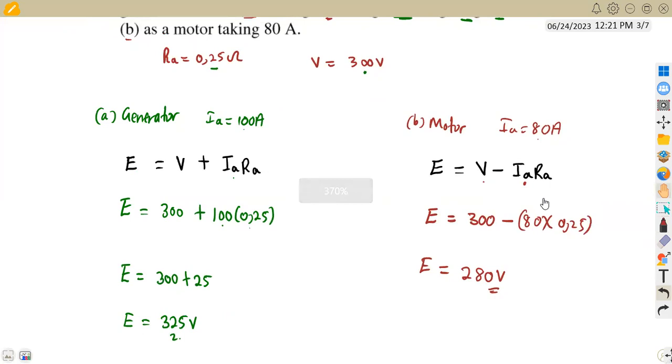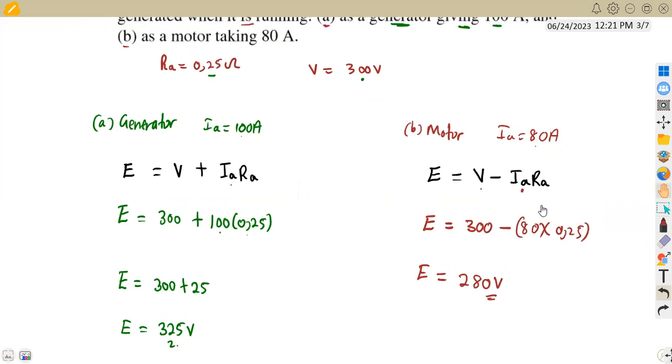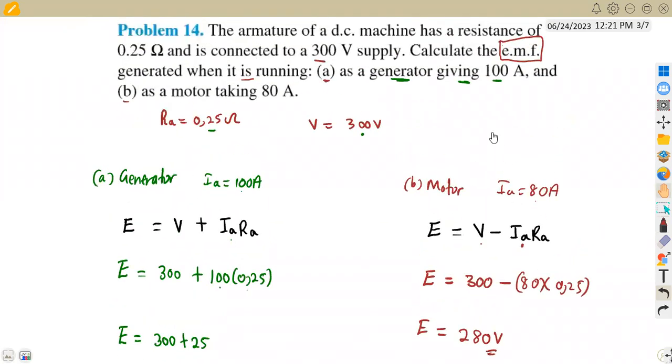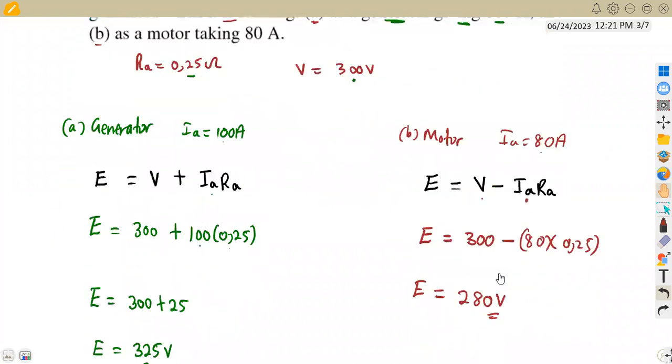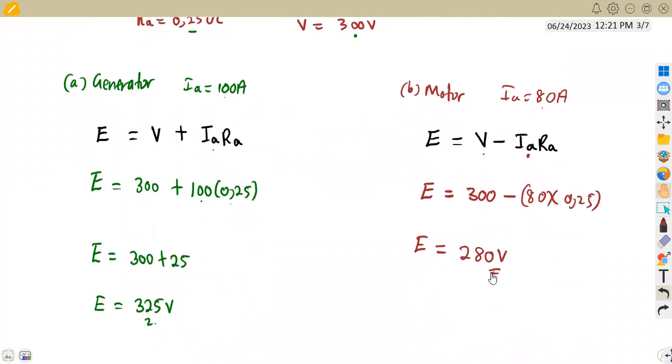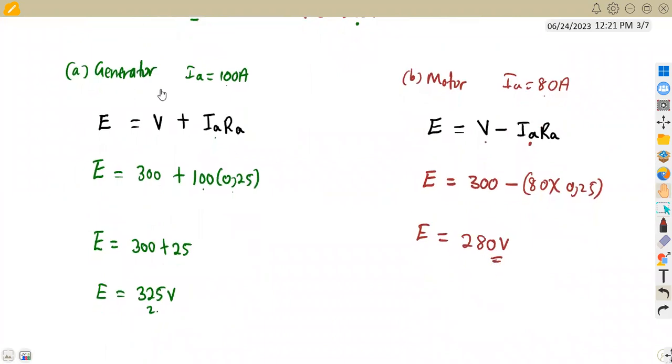So this is how we might be given these questions. What we need is to understand the information that we are given. How are we separating the information we're given for a generator and for a motor? These are the two major concepts that we are going to work with on the generated EMF between a generator and a motor. So that's it guys from Maison African Motives till we meet again.